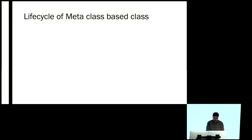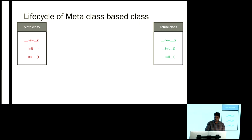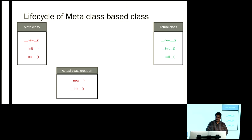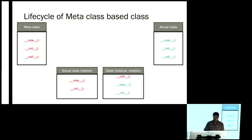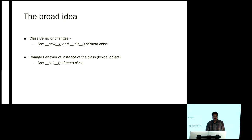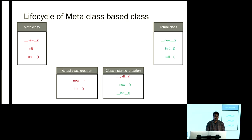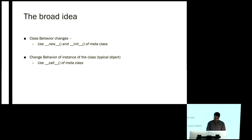Representing this pictorially: in the metaclass you have the new, init, and call methods. In the actual class, you again have new, init, and call methods. Whenever the actual class is created, the metaclass's new and init methods get called. When I create an instance of a class, the metaclass's call method gets called and the actual class's new and init methods get called. The broad idea: if you want to change something in the actual class, use the metaclass's new and init methods. If you want to change the behavior of a class's instance, use the call method of the metaclass.